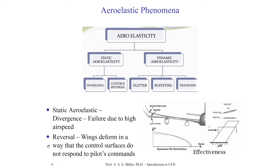Aeroelastic effects can be classified in two categories: static and dynamic. In static cases, we might have divergence where the wing just deforms and breaks off, or control reversal where the effect of controls is reversed. Dynamic effects often involve periodic oscillations that grow to infinity, and something will break on the aircraft. Flutter is one example — you might even notice it looking at a stop sign while driving; it vibrates back and forth in a twisting motion. The sign can be treated as a wing whose dynamics are coupled with the fluid dynamics, eventually causing it to break off.